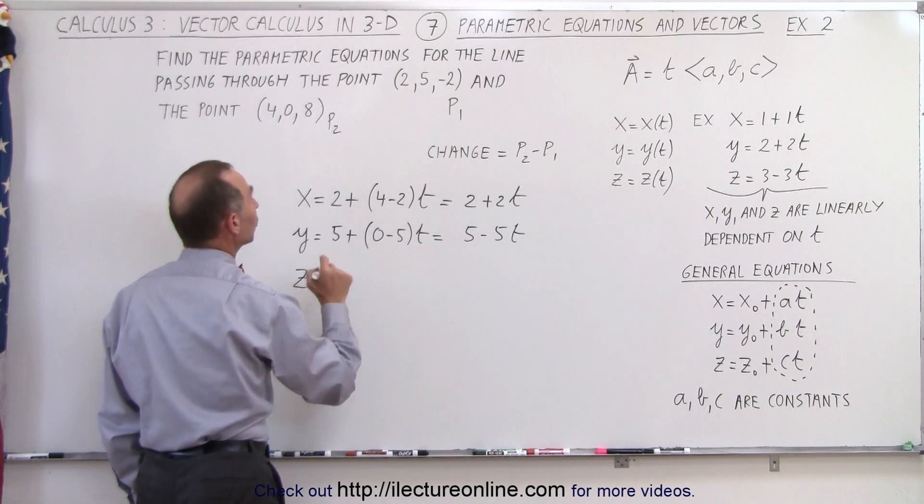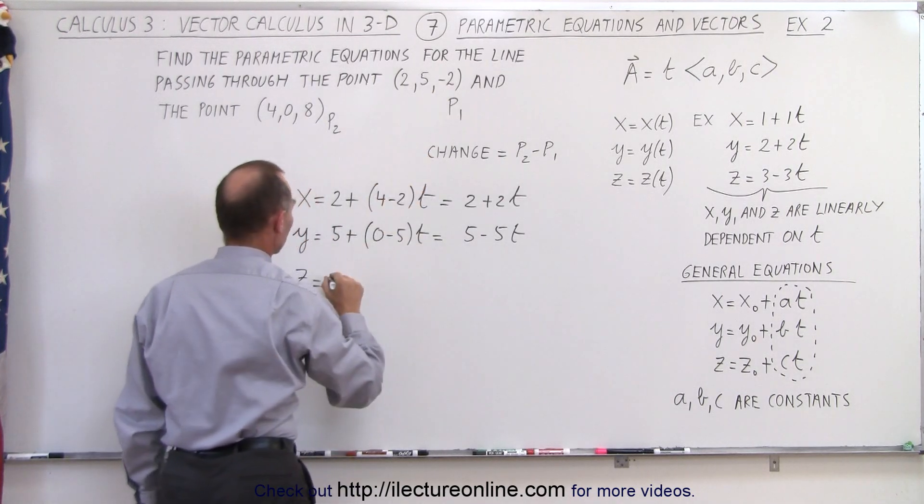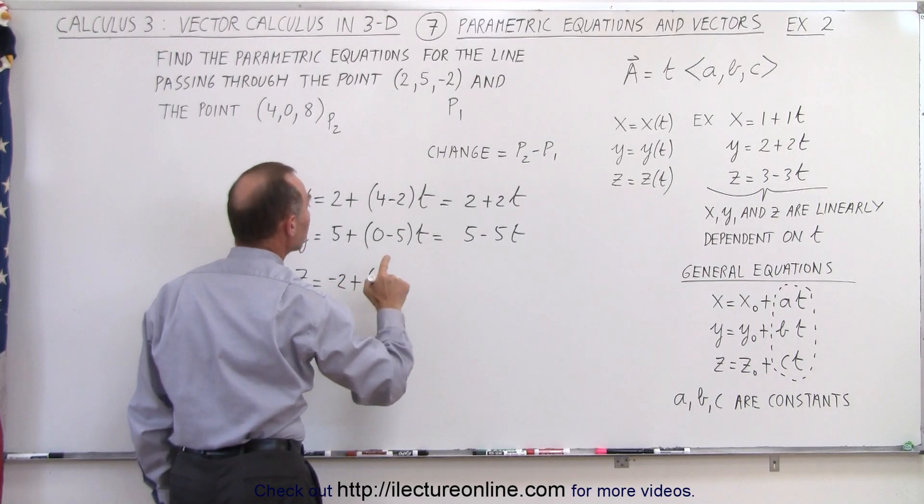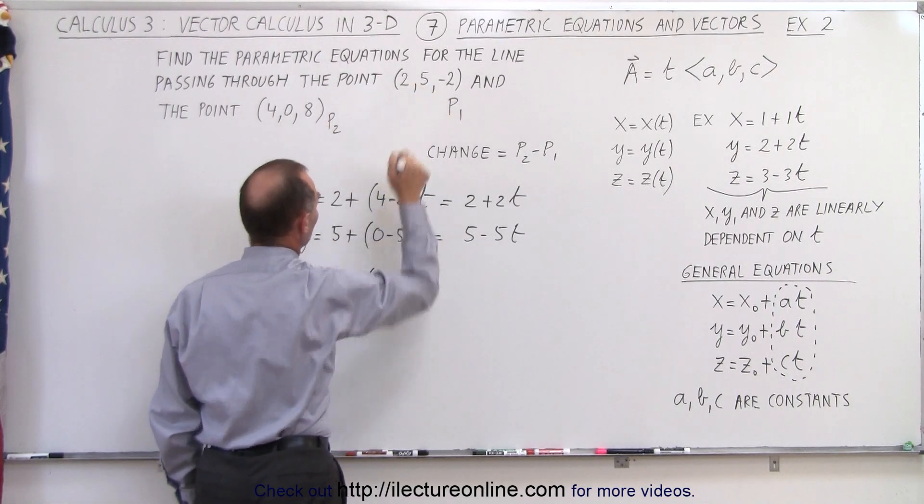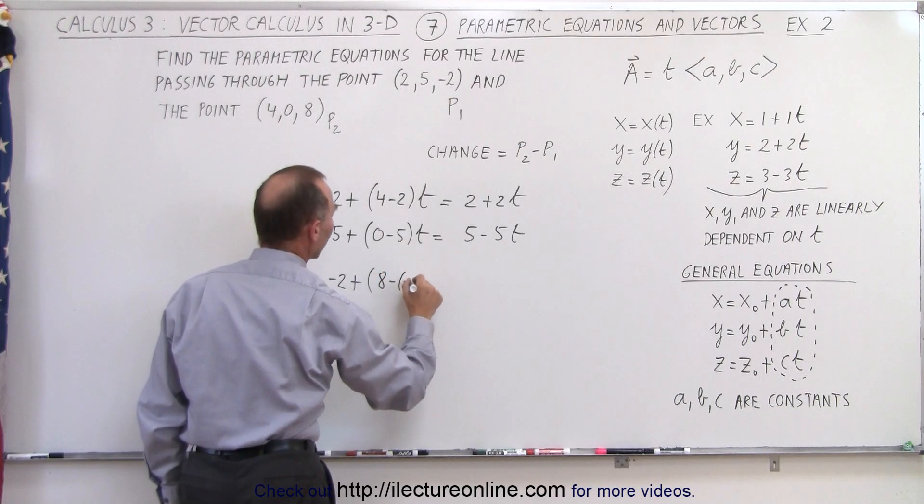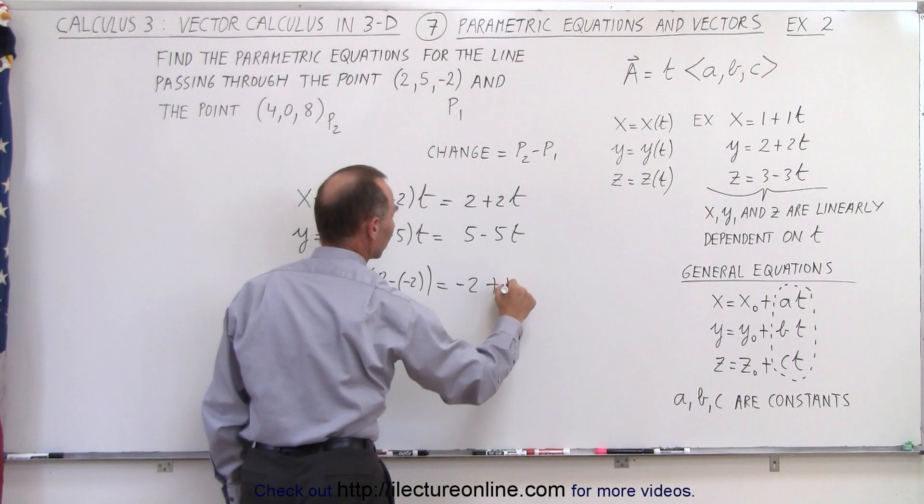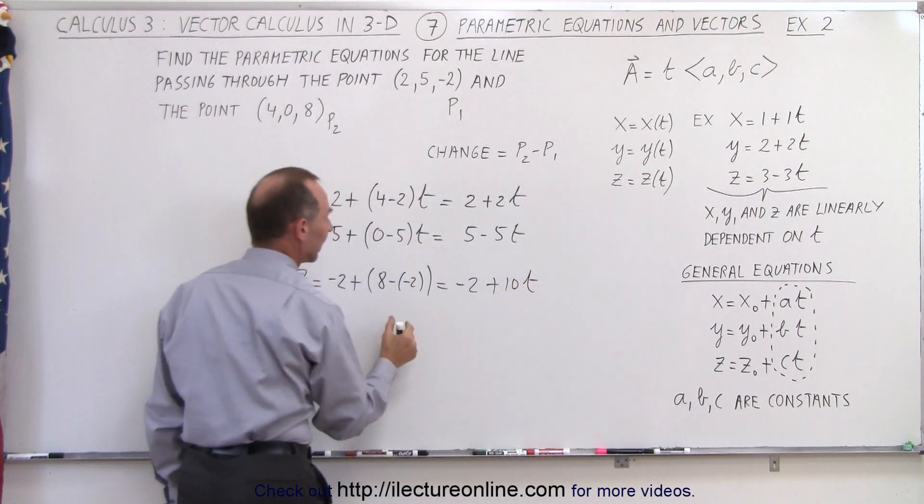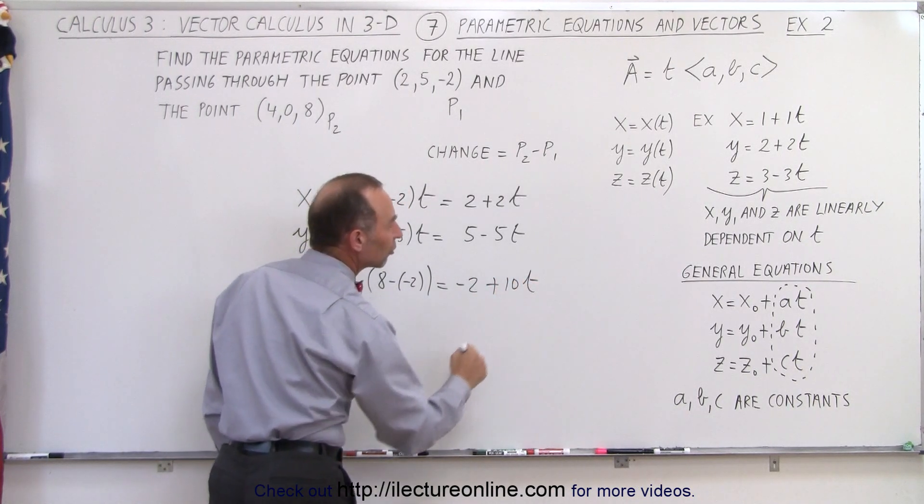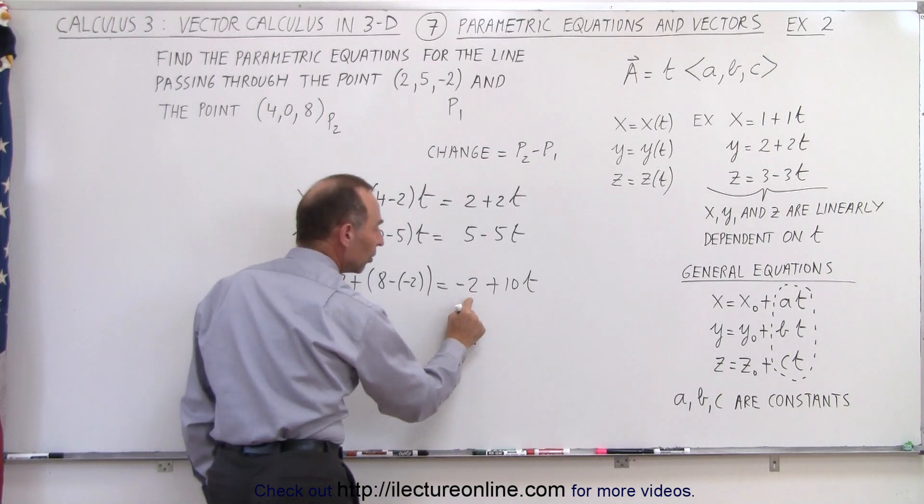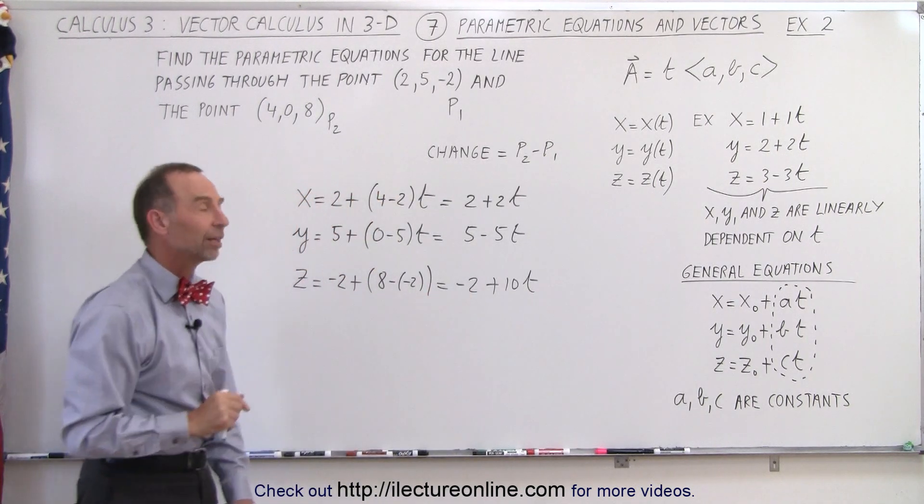And then z is going to be equal to the initial position of z, which is minus 2, plus the change in z, which is the final position minus the initial position, 8 minus negative 2. So this is going to be written as minus 2 plus 10 times t. Again, that's the change in z for each unitary change in t and a starting point at z equals negative 2.